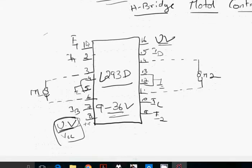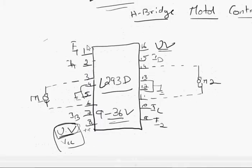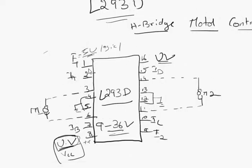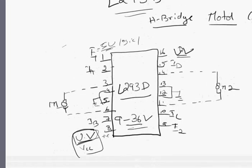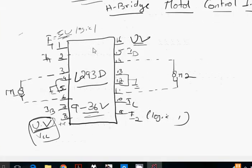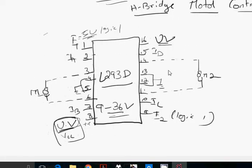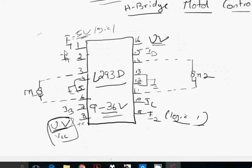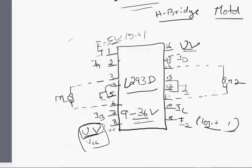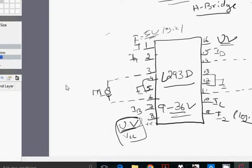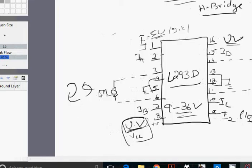Pin 9 is Enable 2. Pins 10 and 15 are inputs IC and ID for motor 2. Pins 11 and 14 connect to motor 2 terminals. Pins 12 and 13 are shorted to ground. Pin 16 is unregulated voltage again. The IC has two symmetric halves. If Enable 1 at pin 1 is logic one, the left side works. If Enable 2 at pin 9 is logic one, the right side works. Normally both pins 1 and 9 are set to logic one.